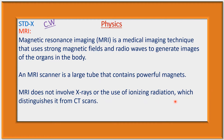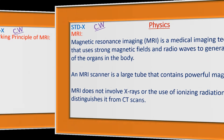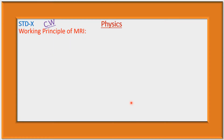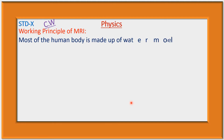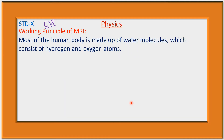MRI does not involve X-rays or the use of ionizing radiation, which distinguishes it from CT scan. In CT scan, X-rays are used, but in MRI there is no use of X-rays or any other type of ionizing radiation. This is the main difference between CT scan and MRI.